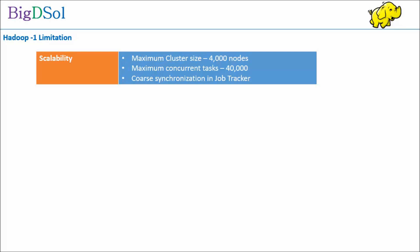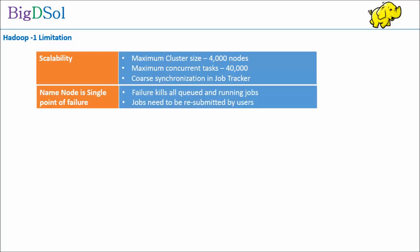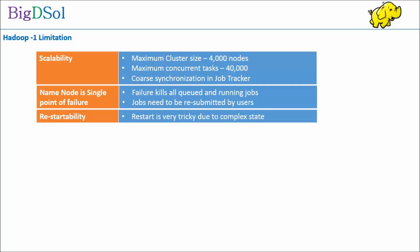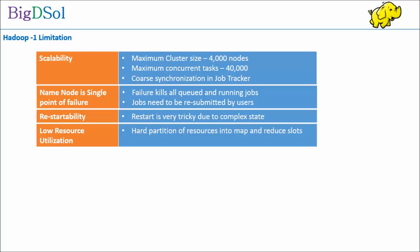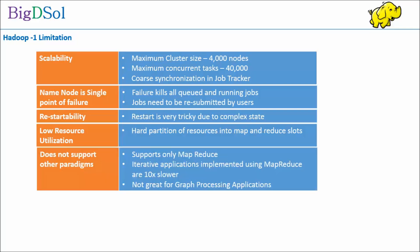Second, NameNode is a single point of failure — failure kills all queued and running jobs, and jobs need to be resubmitted by users. Third is restartability — implementing it is tricky. Next limitation is low resource utilization, as resources are assigned to fixed map and reduce tasks. There is also an obvious limitation of not supporting any paradigm except MapReduce.